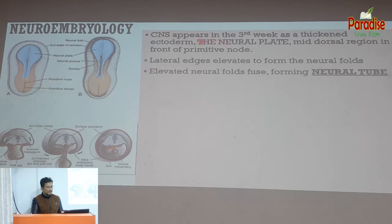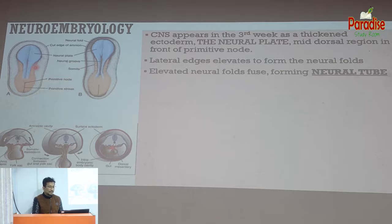The neural plate is generally derived from the ectoderm. The ectoderm is developed as the anterior portion of the primitive node and has an underlying structure — the notochord. This ectoderm develops overlying the notochord, forming the neural plate, which is covered in the neural group and neural tube group.